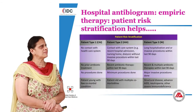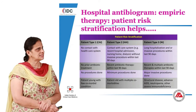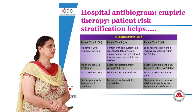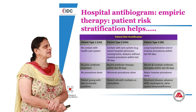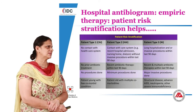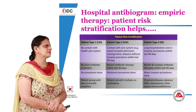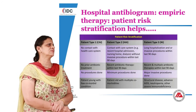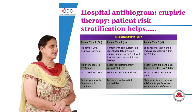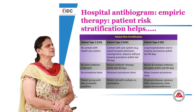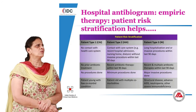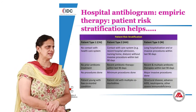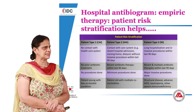The hospital antibiogram essentially guides empiric therapy. There is also patient risk stratification, which depends on patient type: Type 1 with no contact with the healthcare system, those with some healthcare contact, and ICU patients who typically have long hospitalizations and invasive devices within the last 60 days.